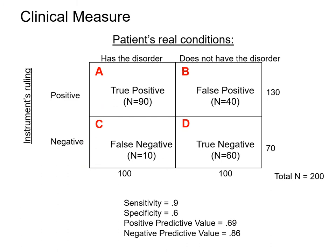In the clinical measurement sense, the classic two-by-two table looks at the patient's real condition versus the instrument's ruling. The table is divided into cells A, B, C, D. In cell A, the patient has the real disorder and the instrument's ruling is positive — this is a true positive. In cell D, the patient does not have the disorder and the instrument says negative — this is a true negative.